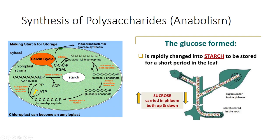Plants store starch in both chloroplasts and amyloplasts. During daylight hours, as photosynthesis is occurring, most of the 3-phosphoglyceraldehyde is retained within the chloroplasts and gluconeogenesis converts it to glucose. It is polymerized to starch within the chloroplasts, and by afternoon chloroplasts are usually swollen because of the large starch grains they contain.